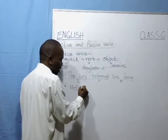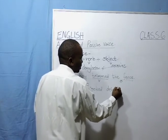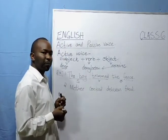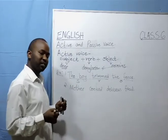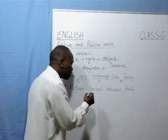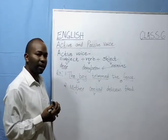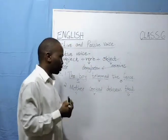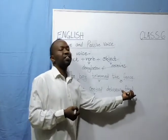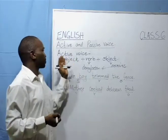Let's have another example. Mother cooked delicious food. In this sentence, which is the subject? The subject is 'mother.' Which will be our verb? 'Cooked' will be our verb. What about our object that receives the cooking? It is the food. Now, somebody asks about the word 'delicious.' We all know that 'delicious' is an adjective that is just describing the object, food. So those sentences are in the active voice: subject, verb, object.